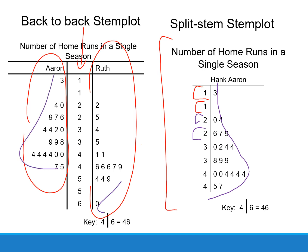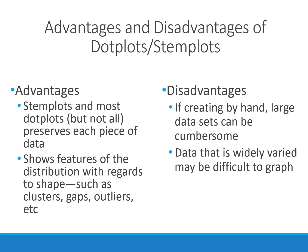All of these are skewed to the left. Regarding advantages and disadvantages of dot plots and stem plots: the advantages are that stem plots and most dot plots preserve each piece of data — we can see the actual data values — and they show features of the distribution like shape, whether it's symmetric or skewed, and any gaps. The disadvantage is that with a large data set, these displays would take too long to make, and if the data is widely varied and spread out, these graphs can be difficult to work with.